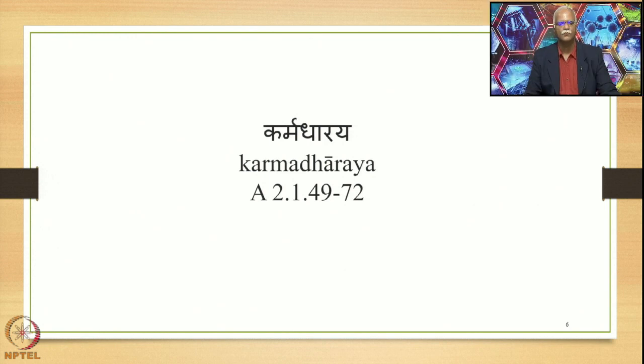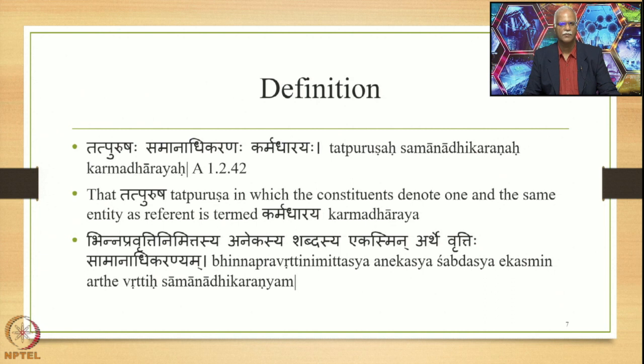We also stated that the many varieties of Tatpurusha Samasa start with the Vibhakti Tatpurusha in the Ashtadhyayi. We studied the Vibhakti Tatpurusha — Dvitiyat, Trutiyat, Chaturthi, Panchami, Saptami, and Shasthi in that order. After studying the Vibhakti Tatpurusha, we highlighted that the Samasa or Samartha theory is based on the Karaka theory. Now we are studying the Karma Dharaya Samasa, which is stated in 2.149 up to 2.172. The Adhikara governing the Karma Dharaya section is Samanadhi Karanen. The term Karma Dharaya is defined in Panini's grammar as Tatpurusha Samanadhi Karanaha — Karma Dharaya.